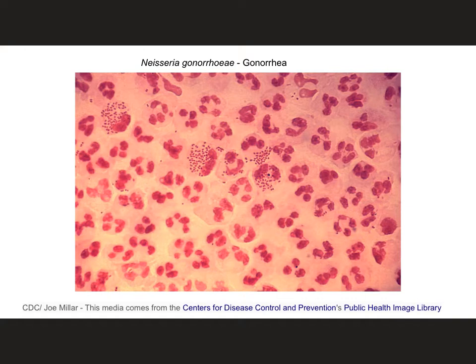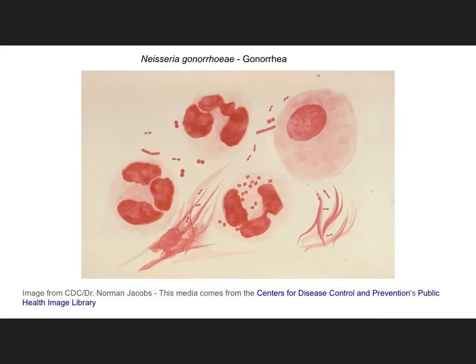We begin with Neisseria gonorrhoeae, which is a bacteria that causes gonorrhea. Most of the cells in this image — these large red ones — are actually the cells that live in the human. The bacteria are these very tiny ones. Zooming in, you can see a much closer view of the actual gonorrhea cells. They're very tiny cocci, meaning that they are circular, and they tend to come in pairs, so you'll see that they're always kind of connected to another one.